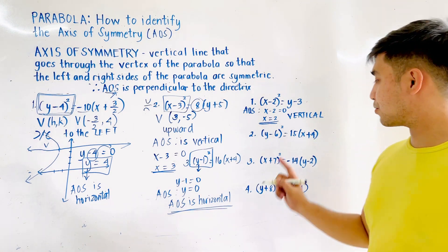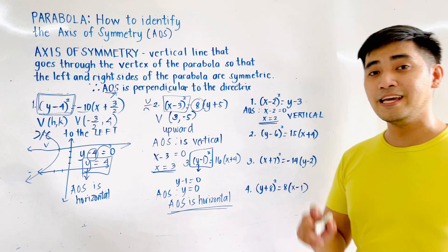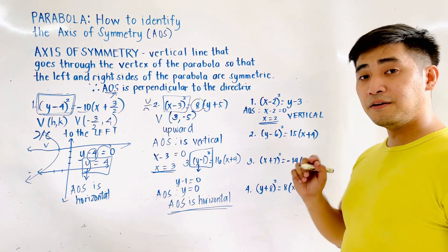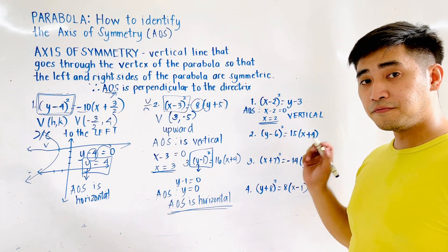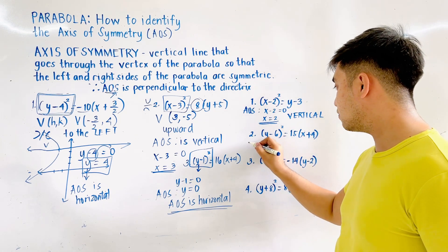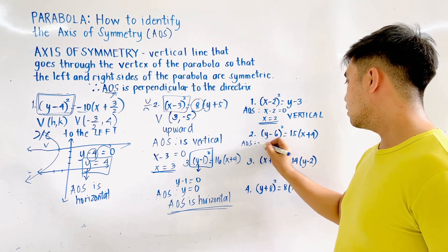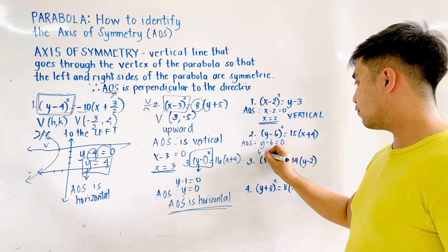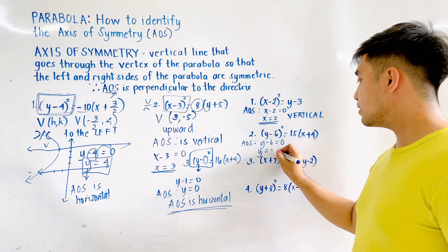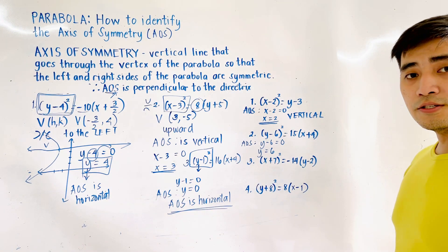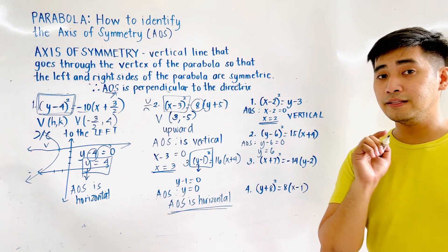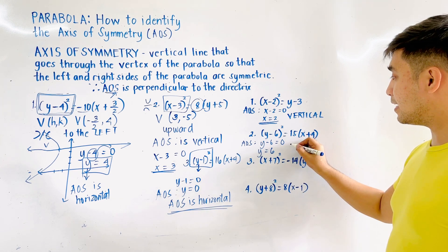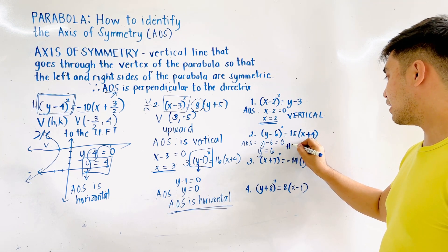For the next one, we are given (y − 6)² = 15(x + 4). The variable being squared is y − 6. So AOS: y − 6 = 0, therefore y = 6. Since we have y = 6, the axis of symmetry is horizontal.